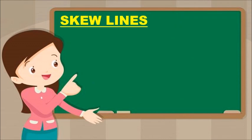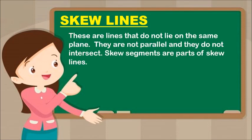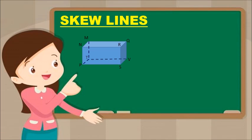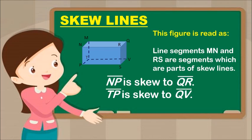Next is Skew Lines. These are lines that do not lie on the same plane. They are not parallel and they do not intersect. Skew segments are parts of Skew Lines. This figure is read as Line Segments MN and RS are parts of Skew Lines. NP is skew to QR, and TP is skew to QV.